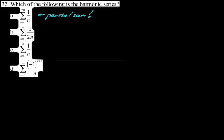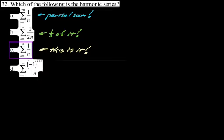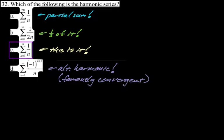Which of the following is the harmonic series? Choice A is the sum from 1 to 20 — just a partial sum, not the full thing. Choice B is half the harmonic series since we go to infinity, but still not it. Choice C is the harmonic series — that's the answer. Choice D is the alternating harmonic series, which is famously convergent but not the harmonic series.